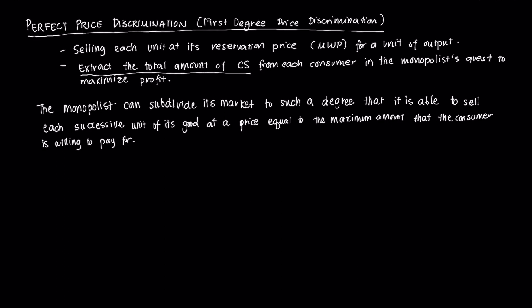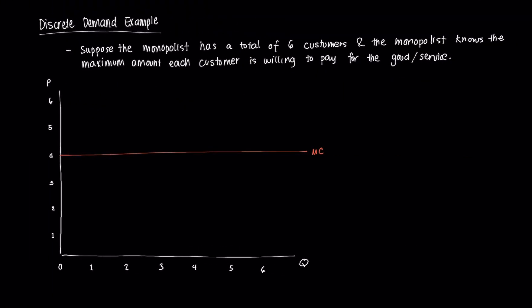To view this more clearly, let's start with an example using a discrete demand case. Suppose the monopolist has a total of six customers and knows the maximum amount each person is willing to pay. The first customer is willing to pay six dollars for one unit. The second customer is willing to pay five dollars for that same unit.